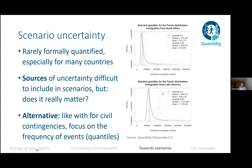Moving on to scenarios: scenarios are rarely formally quantified, especially on a multi-country basis. What has not been done much before is the quantification of uncertainty within scenarios. People have tried to propagate driver uncertainty into migration scenarios, but this is very difficult — with so many interactive drivers, properly accounting for all sources of uncertainty ends up with result uncertainty so overpowering that it obscures the whole picture.